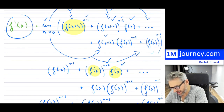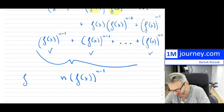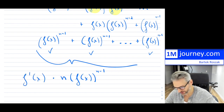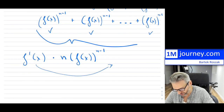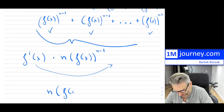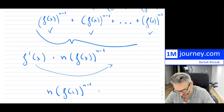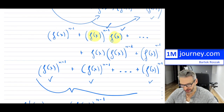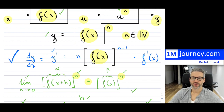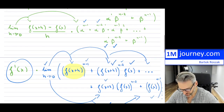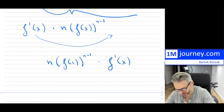Let's not forget what we had in front — we had the derivative of f(x). Multiplication doesn't matter, so we can swap this, and we get n·[f(x)]^(n-1) multiplied by the derivative of f(x). That's exactly what we were looking for — that is the proof of this. Notice this is exactly what we said the chain rule derivative is for these power functions, so that would complete that.